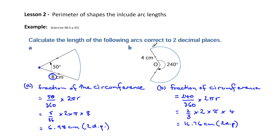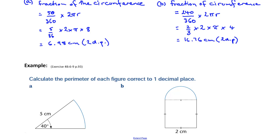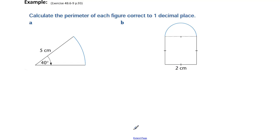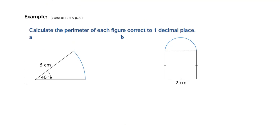So the key here is remembering that we're working out a fraction of a circle — that's a fraction of the circumference — and the fraction is the angle over the total possible 360 degrees. In this case, 50 over 360, and then we multiply it by the formula for the circumference of a circle. Now let's have a look and see how we can do some questions based on this idea.